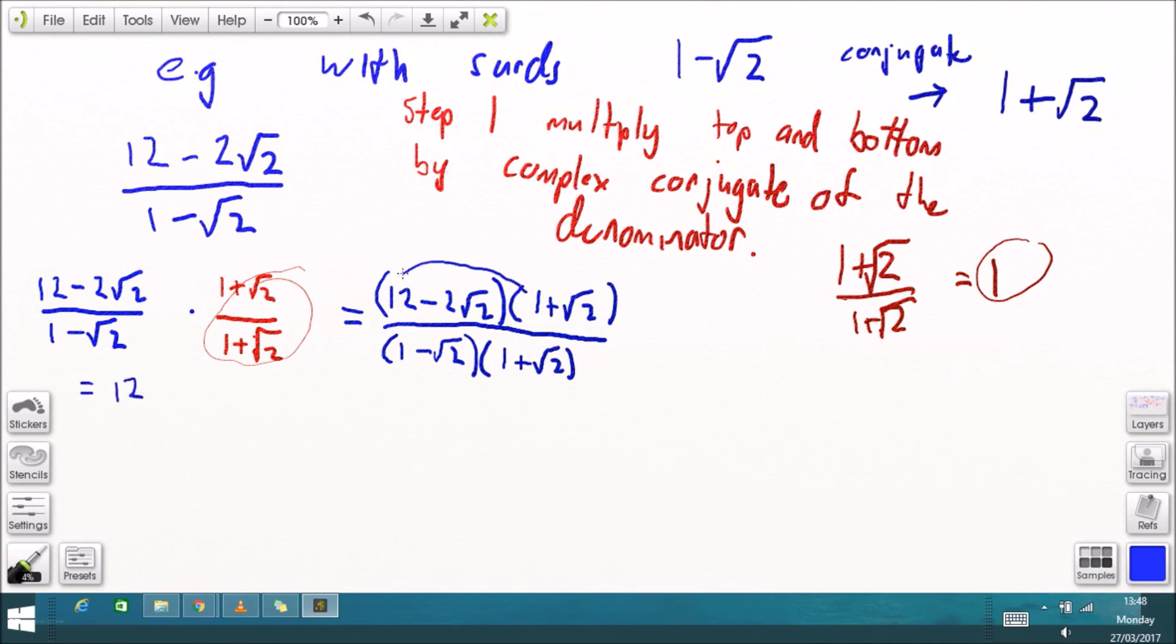so just using your method for quadratic factorization, 12 times 1 is 12, 12 times root 2 is 12 root 2, minus 2 root 2 minus 2 root 2 squared